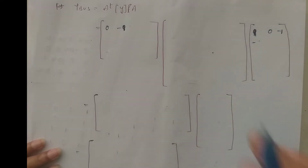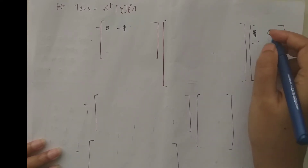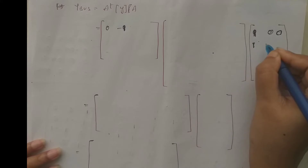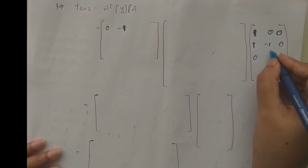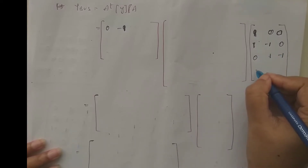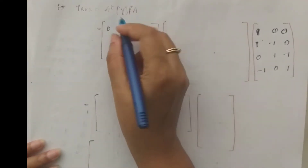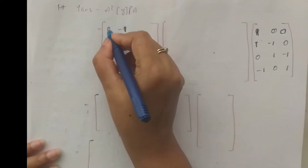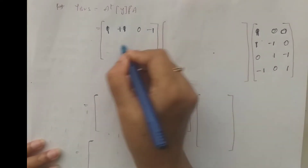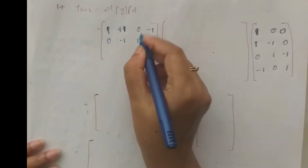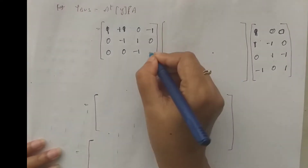Matrix A is: row 1: [1, 0, 0, 0]; row 2: [1, -1, 0, -1]; row 3: [0, 1, -1, 0]; so A transpose has rows: [1, 1, 0, -1], [0, -1, 1, 0], [0, 0, -1, 1].